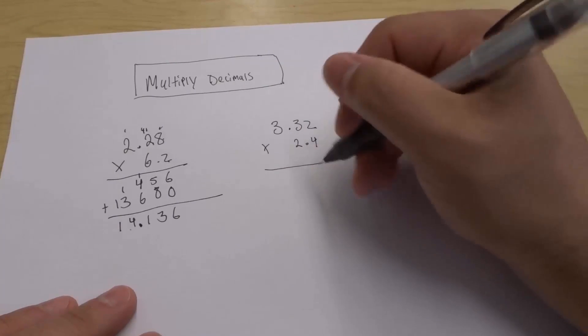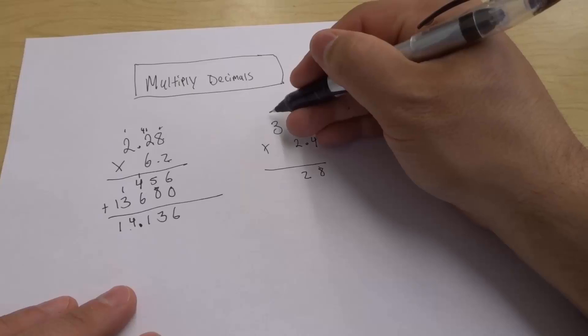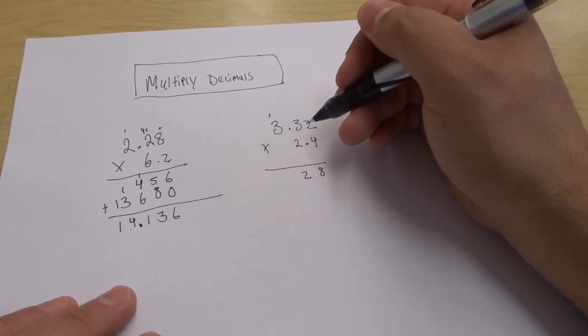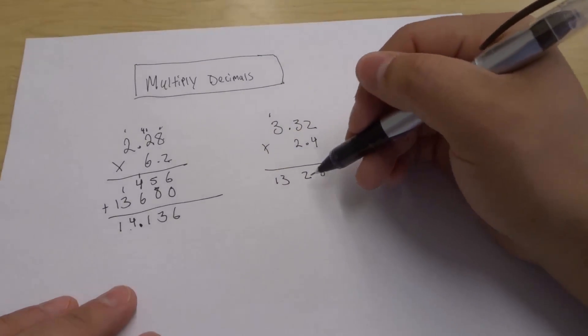4 times 2 gives us 8. 4 times 3 gives us 12, so we bring the 2 down here and the 1 up here. 4 times 3 gives us 12 again, plus 1 is 13. It's going to look something like that: 1, 3, 2, 8.